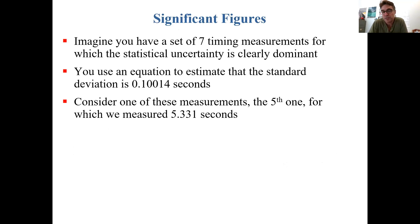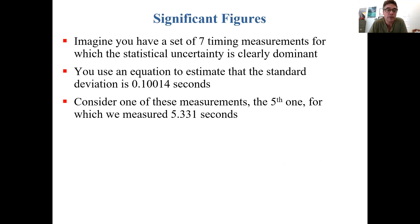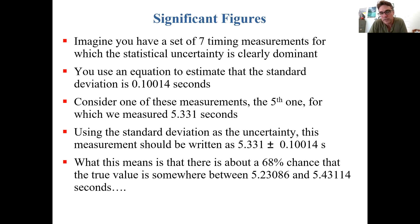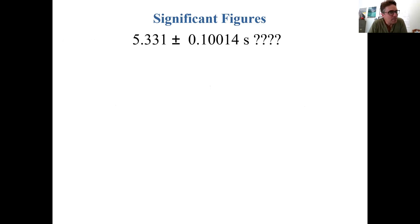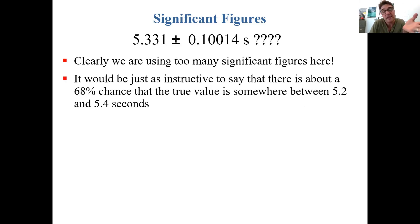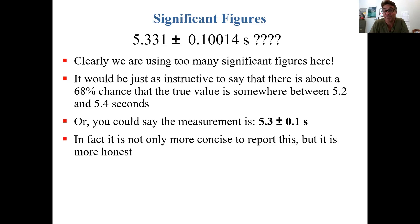Let's consider one of these measurements. Let's take the fifth one, for which we measured 5.331 seconds. Using the standard deviation as the uncertainty, this measurement should be written as 5.331 plus or minus that standard deviation. This means there's about a 68% chance that the true value is somewhere between that mean minus the standard deviation and the mean plus the standard deviation. Is that really what we should write? I believe that clearly, something about common sense tells me we're using too many significant figures here. It would be just as instructive to say there's about a 68% chance that the true value is somewhere between 5.2 and 5.4 seconds, or you could say the measurement is 5.3 plus or minus 0.1. In fact, it's not only more concise to report this, but it's really more honest.